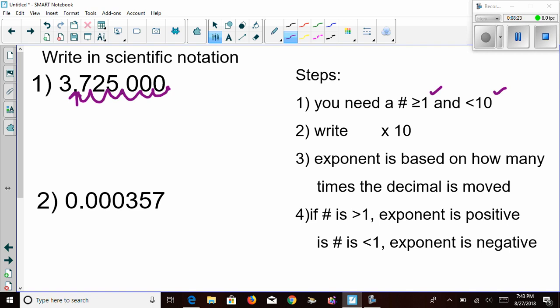What I'm going to do next is I'm going to write that number 3.725. I'm going to go ahead and now write times 10. And I need to decide about my exponent. The exponent is based on how many times the decimal is moved. Well, we moved the decimal one, two, three, four, five, six times.